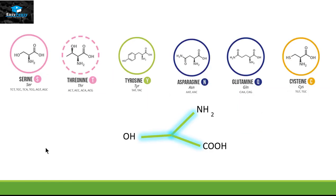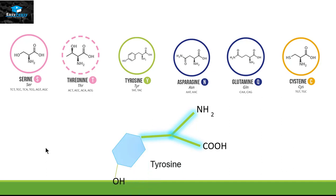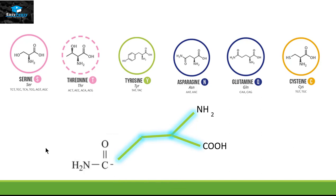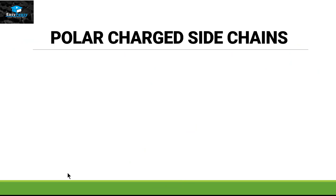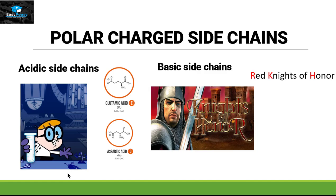Let's take a quick recap for polar uncharged amino acids using the fork structure. By attaching OH we get serine. This is threonine, this is tyrosine, this is asparagine, this is glutamine, and this is cysteine. Next, the category of polar charged side chains — we have acidic side chains and basic side chains.